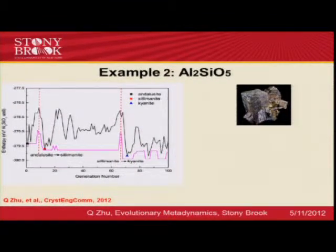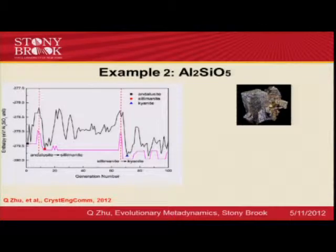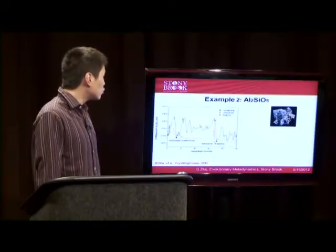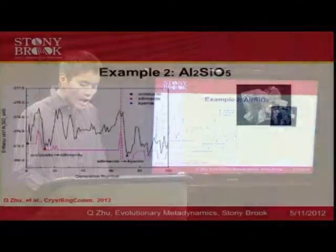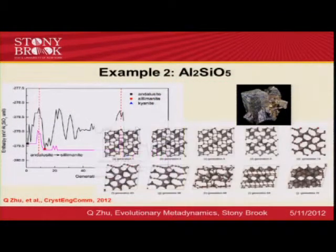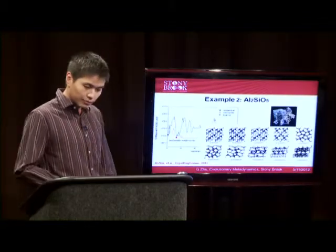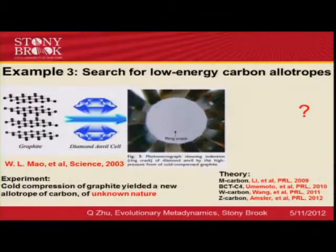Another example is also related to earth science: aluminum silicate, another important mineral abundant in the earth's mantle. Aluminum silicate can adopt many polymorphs, and due to the high energy barriers between each polymorph, it is computationally very challenging to study the phase transition. However, by using our method, starting from the low-pressure form andalusite, we indeed observe a sequential phase transition to sillimanite and then kyanite. Apart from the crystal structures, we can also collect snapshots between phase transitions, giving us a full picture of the transition mechanisms from a single calculation.